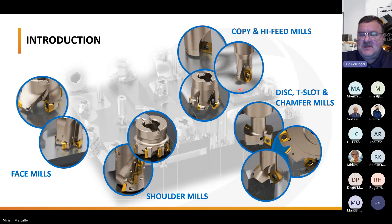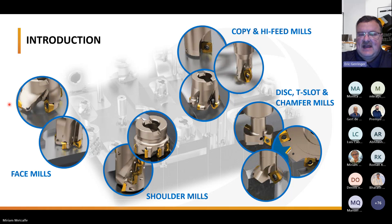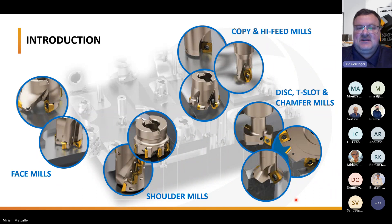The next category groups disc cutters, T-slot cutters, and chamfer mills. Chamfer mills are one of the most probably overlooked types of applications. A lot of customers put chamfers on material, or even use edge rounding to soften that blow so they don't get edge frittering or chipping of the edges. Now let's talk about cutter geometry.